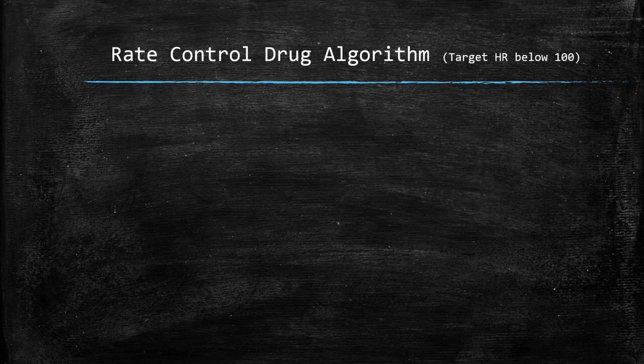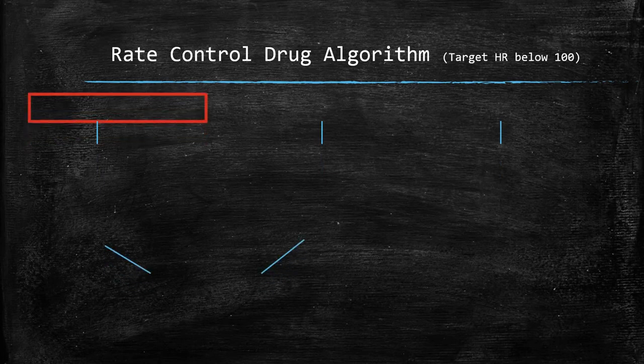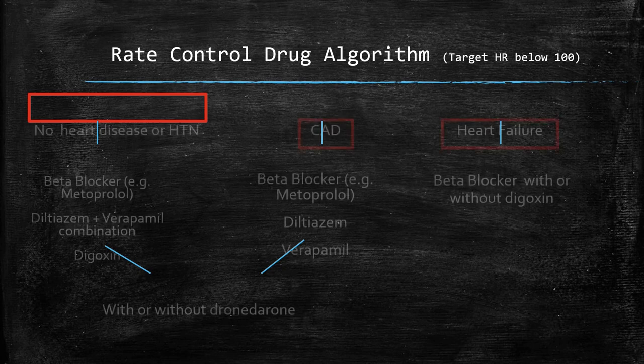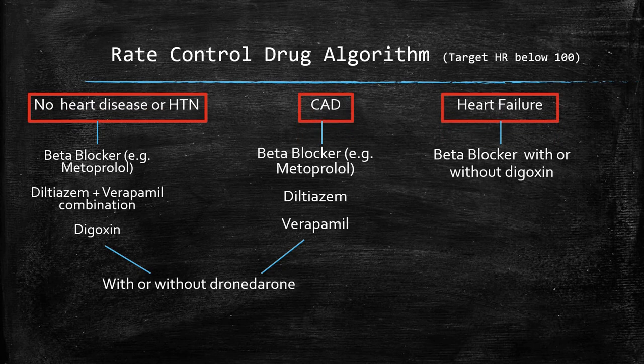Here is a rate control drug algorithm, in which we target a heart rate below 100. We use beta blockers such as metoprolol across the board, switching to bisoprolol or oral agents as needed. Additional calcium channel blocker combinations can be used, as can digoxin if a patient has no heart disease or hypertension. Patients with no heart disease and CAD can undergo therapy using dronedarone if required.